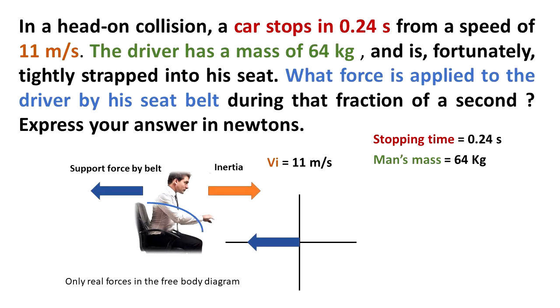Let's do the free body diagram. The only force exerted on the man is the support force, but that's the only real force. The orange arrow represents the inertia of the man going forward.